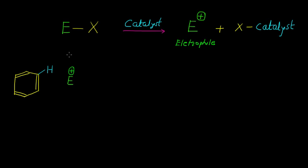In the second step, the pi electrons which are present in the benzene ring will attack on this electrophile in this fashion. And now we have the intermediate like that.